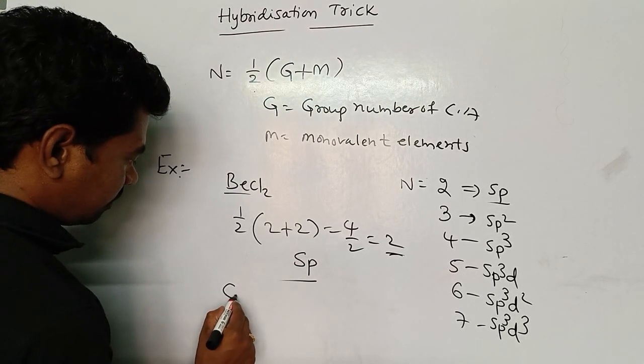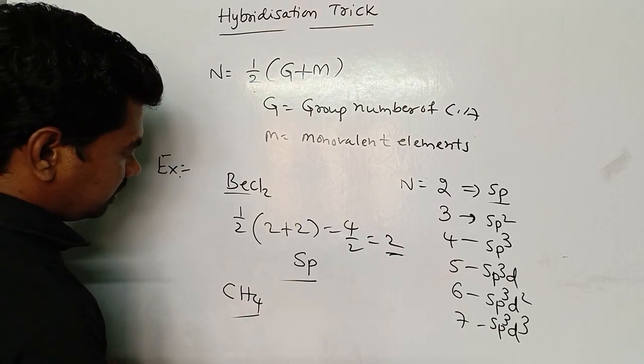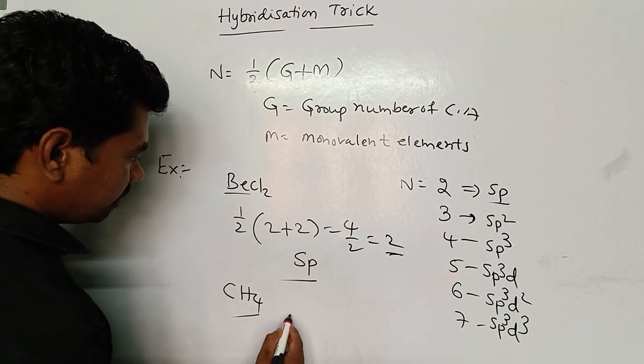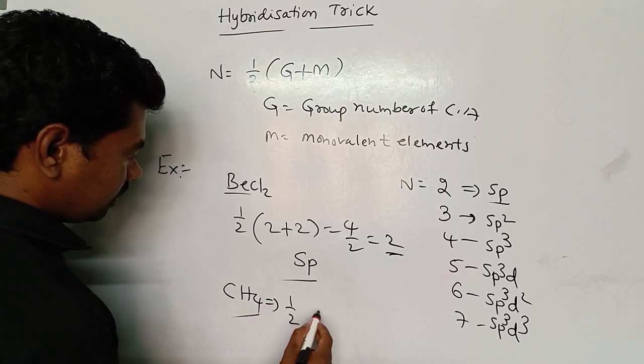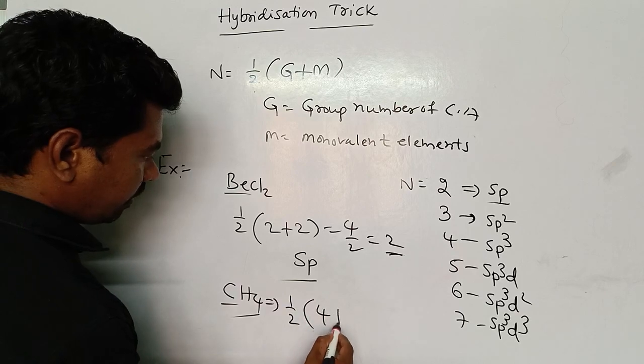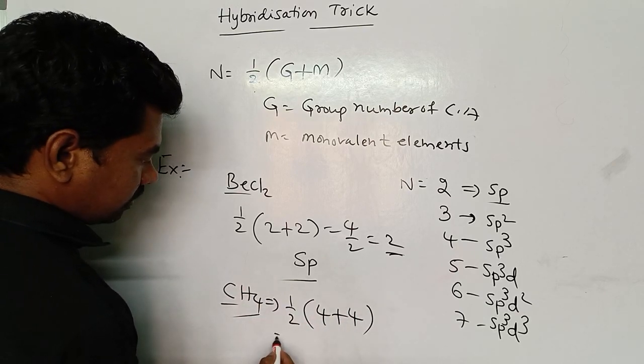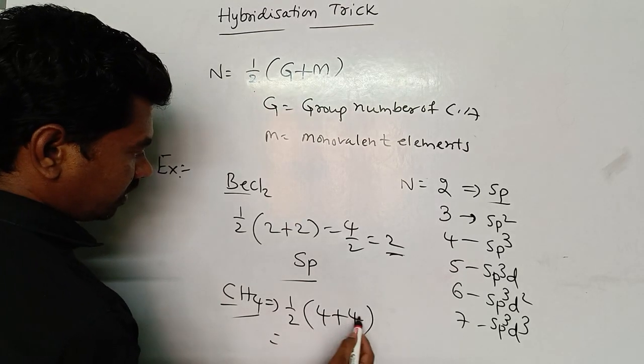For example, next another molecule, CH4. What type of hybridization? Same formula: one-half, group number carbon is 4, plus there are four monovalent elements. So here 4 plus 4 is 8.